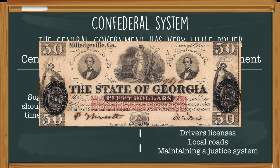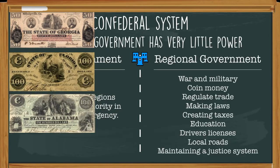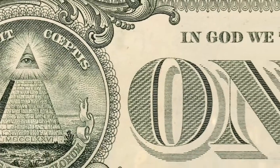And if regional governments have all the power, that means they can make their own money. Take a look at the state of Georgia's $50 bill and Florida bucks and Alabama dollars. Each regional government gets to handle the big picture things like going to war and making money.